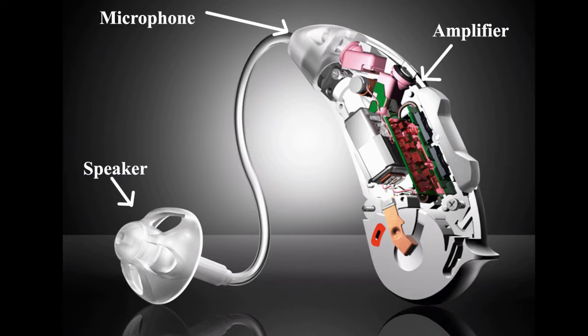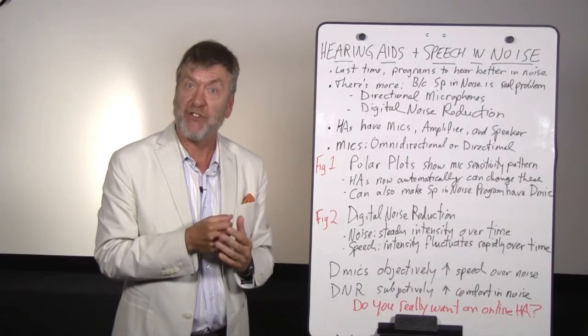The microphone in a hearing aid changes incoming sound into electricity. The amplifier of a hearing aid increases that electrical current. The speaker takes that increased electricity and changes that back into sound. So in a way, a microphone and a speaker are opposites of each other.